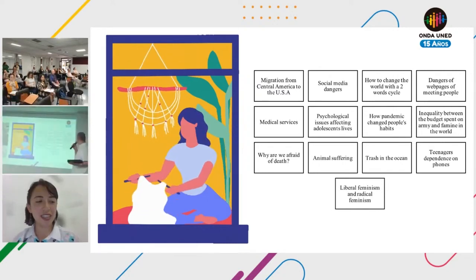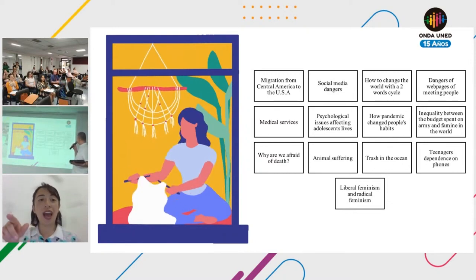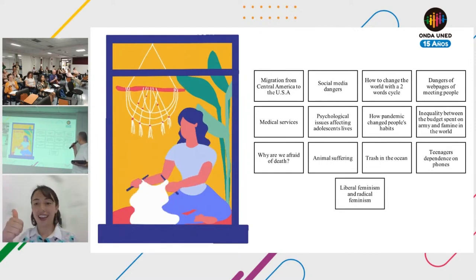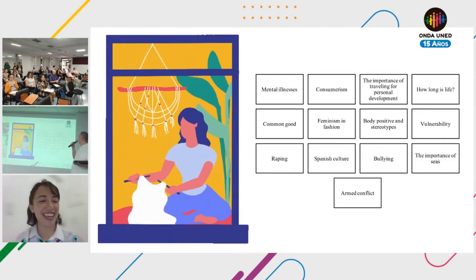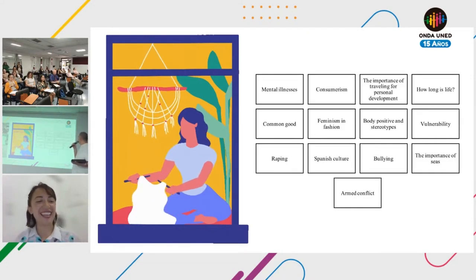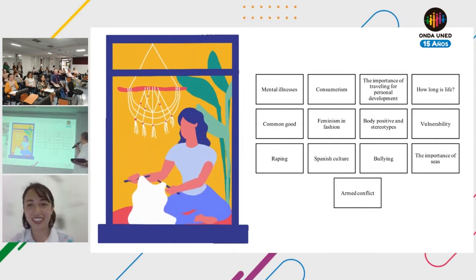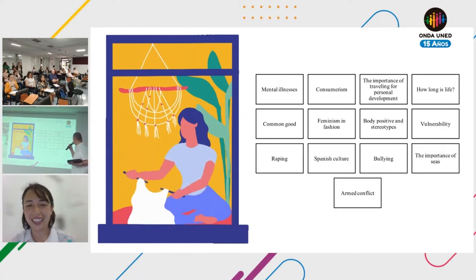Some of the topics from the students include: how the pandemic changed people's habits, trash in the ocean, animal suffering, why are we afraid of death, medical services, mental illness, consumerism, how long is life, vulnerability, bullying, and Spanish culture.